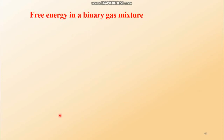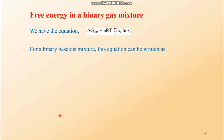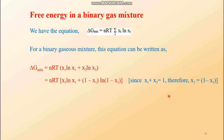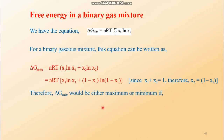Now let us find ΔG_mix for a binary gas mixture, setting i = 1 and 2 in Equation 7. This gives ΔG_mix = nRT(x₁ ln x₁ + x₂ ln x₂). Since x₁ + x₂ = 1, we have x₂ = 1 − x₁. Substituting: ΔG_mix = nRT[x₁ ln x₁ + (1 − x₁) ln(1 − x₁)]. This is the expression for the free energy of mixing of a binary ideal gas mixture.